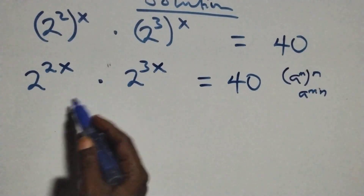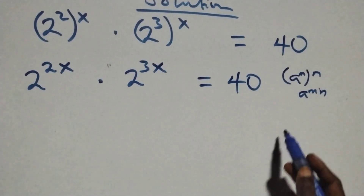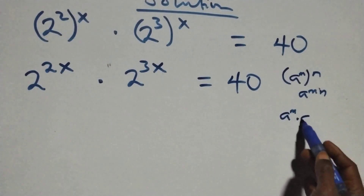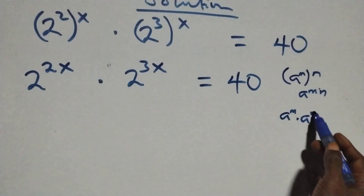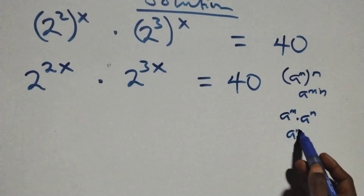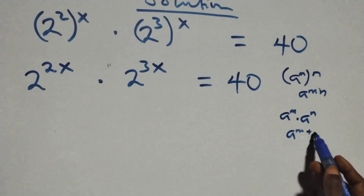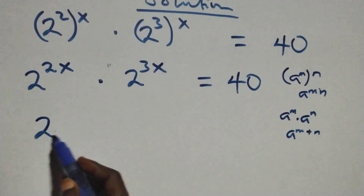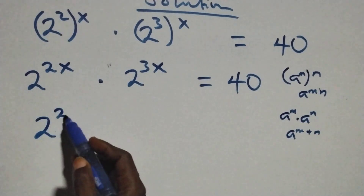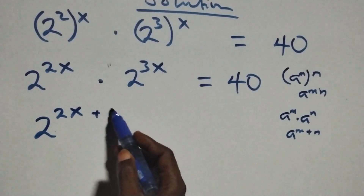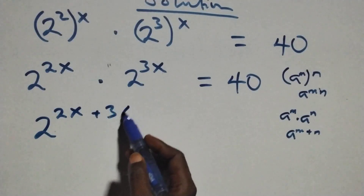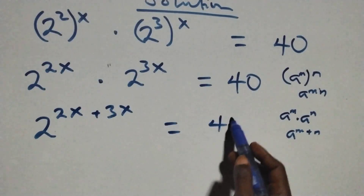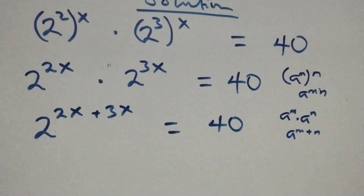This follows the law of indices: when we have a raised to power n times a raised to power n, this is the same thing as a raised to power n plus n. So here we combine the powers and we have 2 raised to power 2x plus 3x equals 40 on this side.